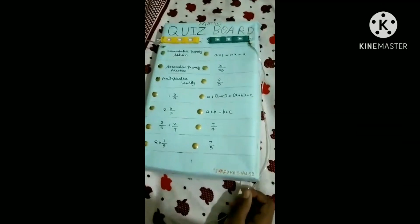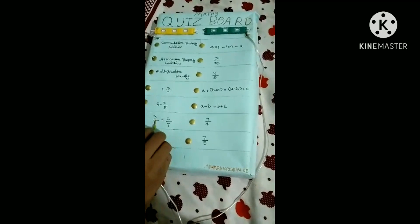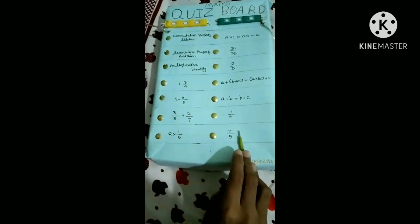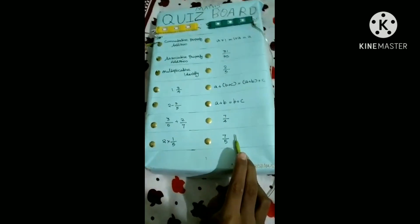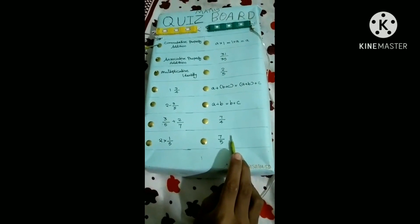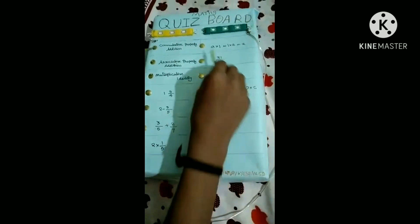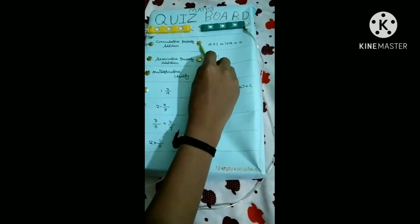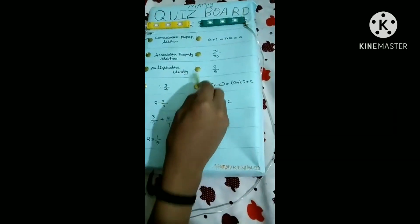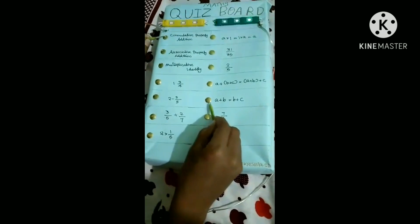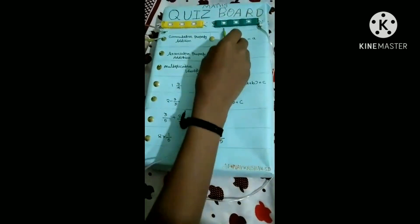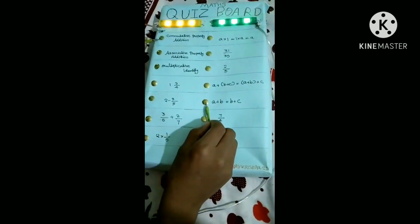This is the math quiz board. These are the questions and these are the answers. First question: commutative property of addition. This is a wrong answer — no, no, no. This is the right answer. The light will glow for the right answer. The right answer is A plus B equals B plus A.